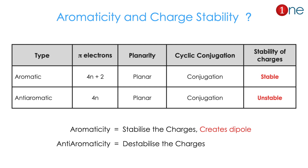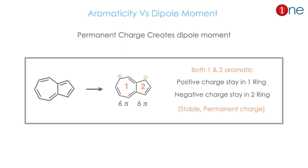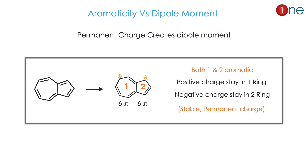Aromaticity can stabilize charges and create a dipole. Let us look at the Azulene system, where charges can be separated as positive or negative. If you look closely, both rings are a 6-5 system, so it can be aromatic and stabilize the charges. Since it is very stabilized, it is permanent — so it creates a dipole. This is how aromaticity can create the dipole.